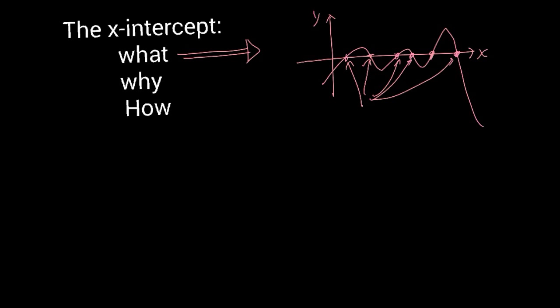x-intercept is really just a fancy term to say, look, I have a curve, it's going to cross the x-axis. Where are those points crossing the x-axis? That's all x-intercept is, it's just a fancy term. Now, more importantly, more interesting, I think, is why on earth do we need it?